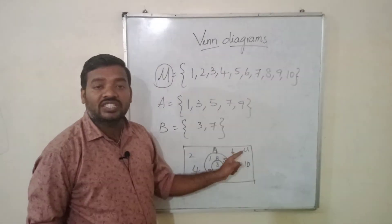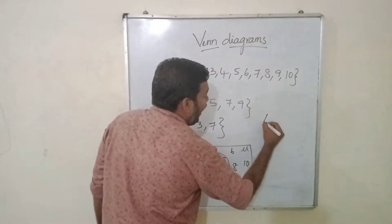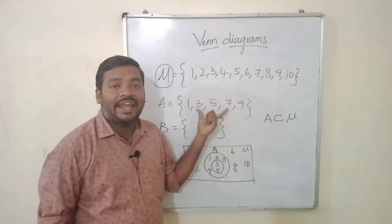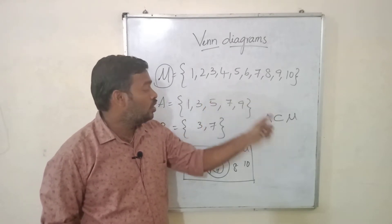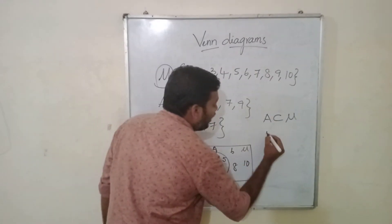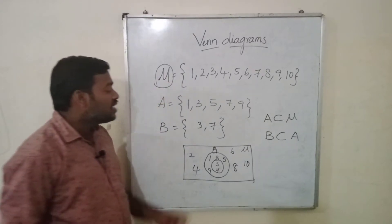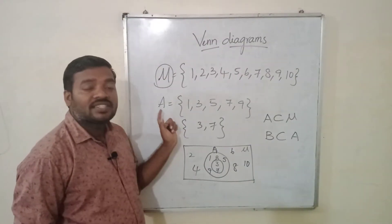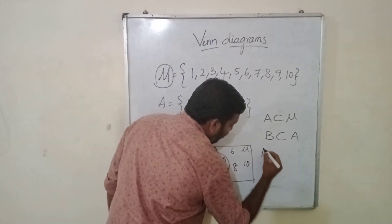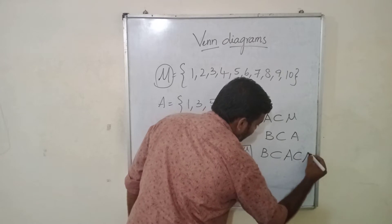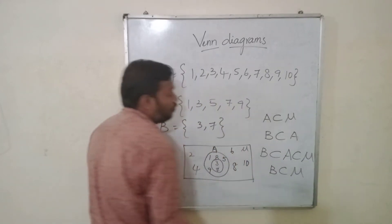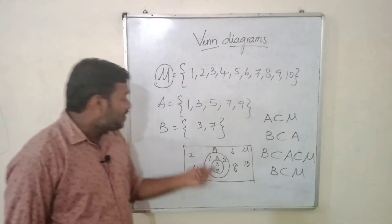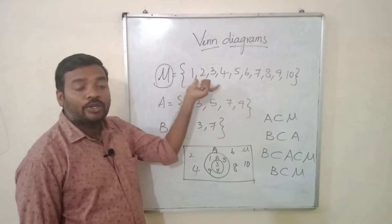So you can say A is a subset of mu — all the elements of A are present in the universal set. A is a subset of mu, and B is a subset of A because the elements of B are present in A and there are more elements in A other than B. So B is a subset of A, and from this you can say B is a subset of mu. That means B is a subset of A and A is a subset of mu, so every element of B is present in the universal set.